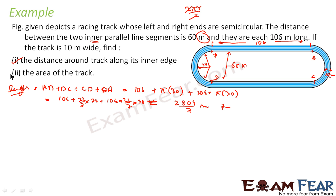Now comes the second part — finding the area of the track. We can divide the track into four regions: Region 1 is a rectangle on one straight side, Region 2 is the annular semicircle on one curved end, Region 3 is the rectangle on the other straight side, and Region 4 is the annular semicircle on the other curved end. Regions 1 and 3 are equal, and Regions 2 and 4 are equal by symmetry.